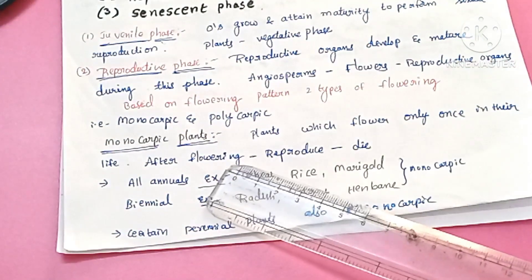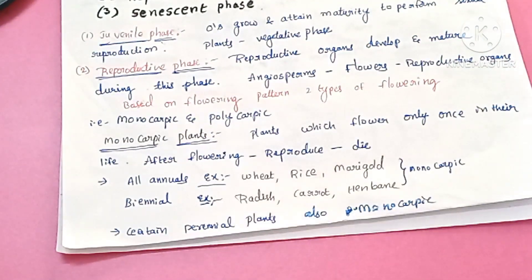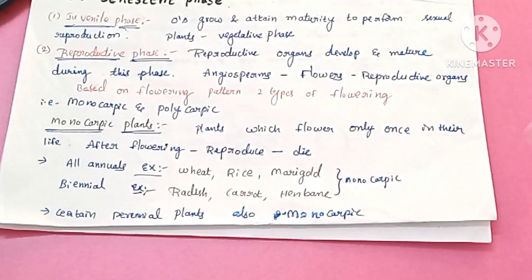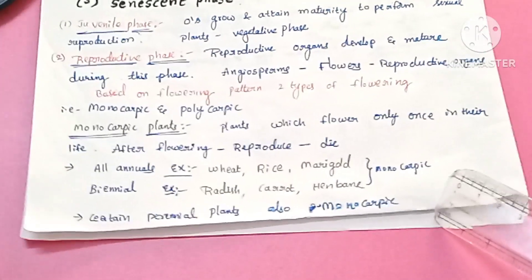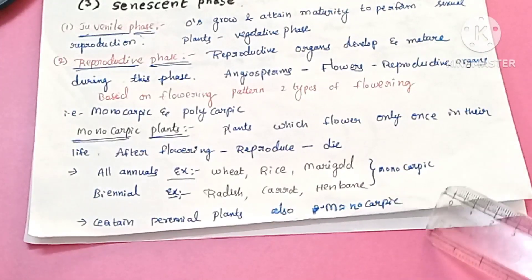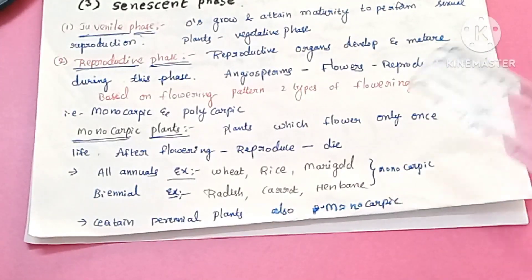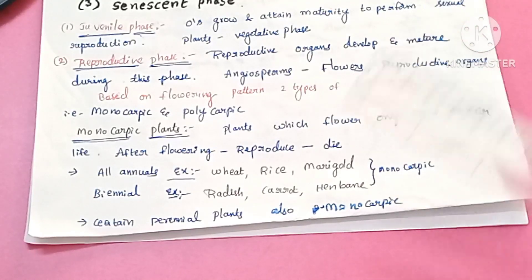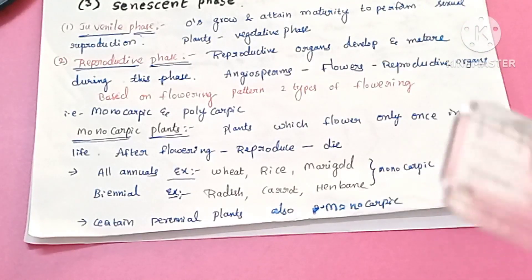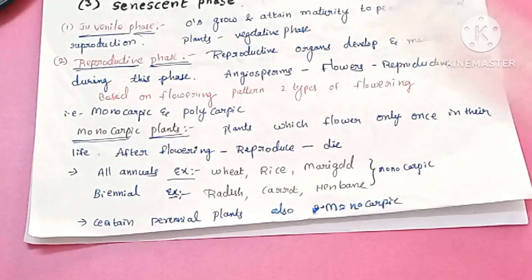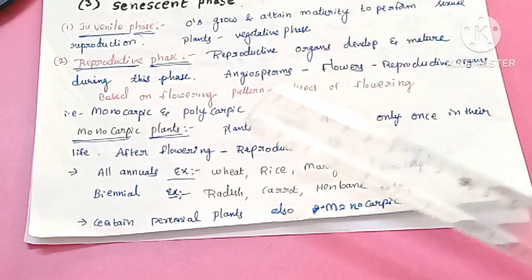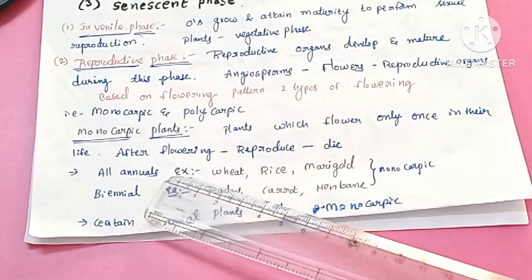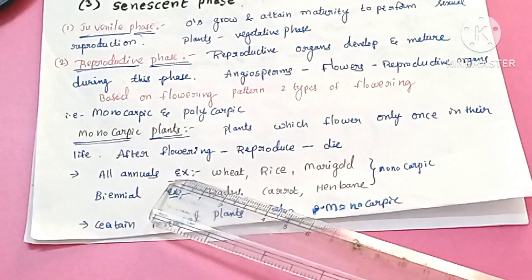Monocarpic plants are plants which flower only once in their lifetime. There are monocarpic plants.